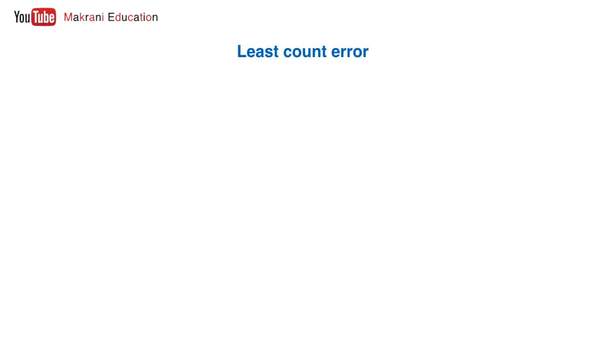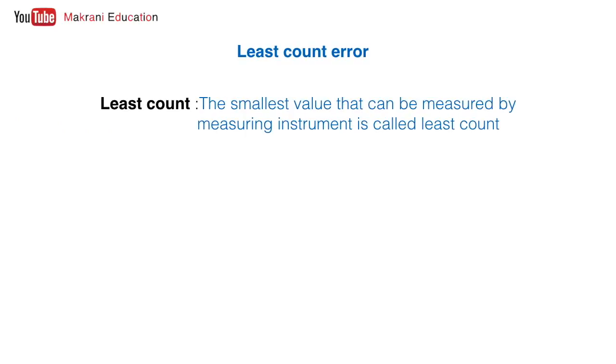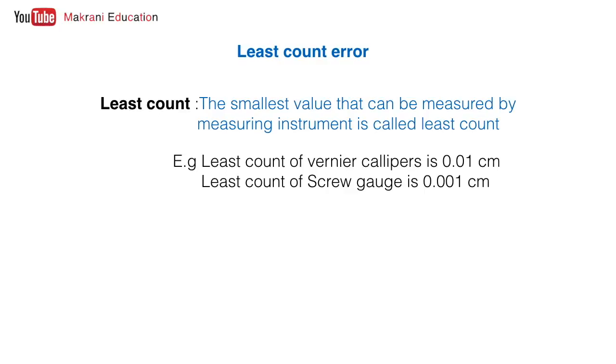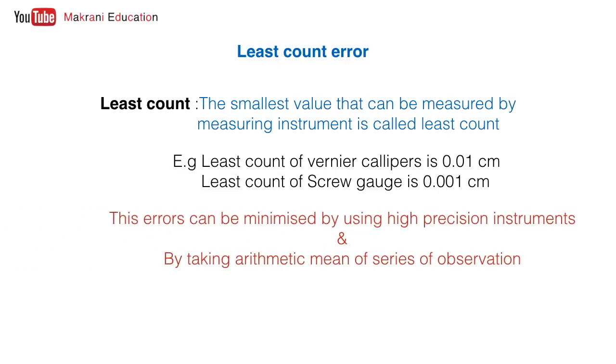The last one is least count error. Least count is defined as the smallest value that can be measured by a measuring instrument. For example, vernier scale has 0.01 centimeter of least count. Least count of micrometer screw gauge is 0.001 centimeter. So while taking reading with screw gauge, there will be more accuracy than vernier calipers. These errors can be minimized by using high precision instruments and also by taking arithmetic mean of series of observations.